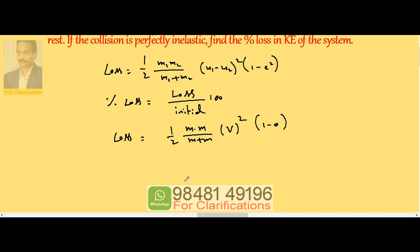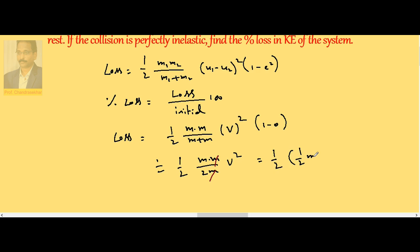Therefore, this becomes equal to half M into M by 2M V square. So cancel M. So this is half times half M V square.